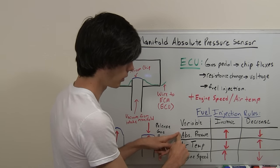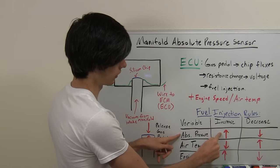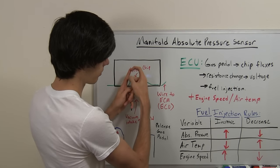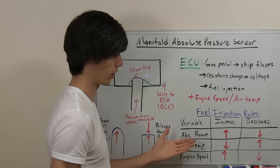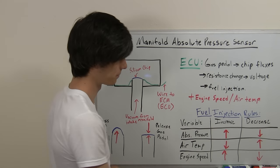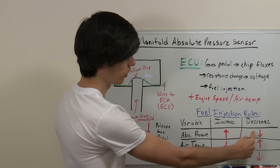So if absolute pressure increases, the silicon chip flexes upward, the engine knows that it needs to inject more fuel because more air is coming in. If you decrease it then you use less fuel.